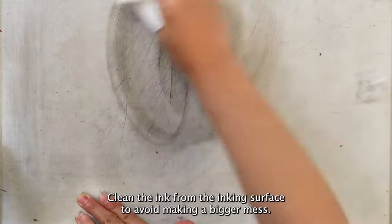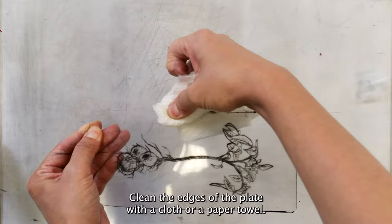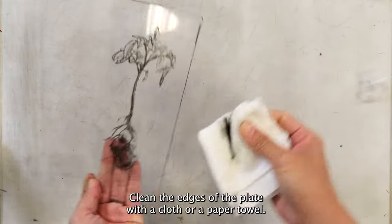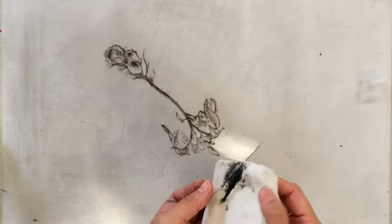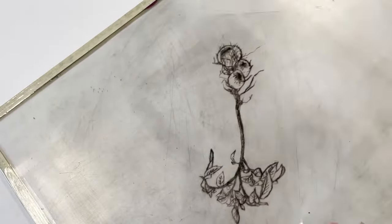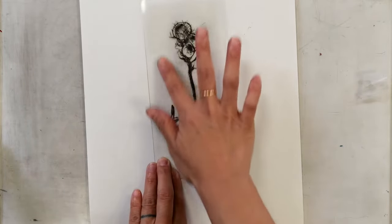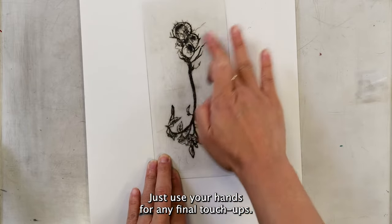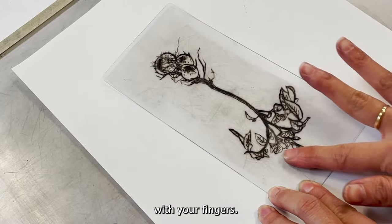Clean the ink from the inking surface to avoid making a bigger mess. Clean the edges of the plate with a cloth or a paper towel. Just use your hands for any final touch ups. You can remove any remaining excess ink more delicately with your fingers.